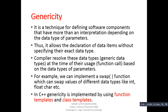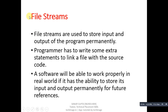Last but not least, file streams. This is a very important feature. File streams are used to store the input and output of a program permanently, as you may have already studied in C language. Programmers have to write some extra statements to link a file with the source code. A software will be able to work properly in the real world if it has the ability to store its input and output permanently for future reference. File streams are therefore a very important feature for any C++ program.